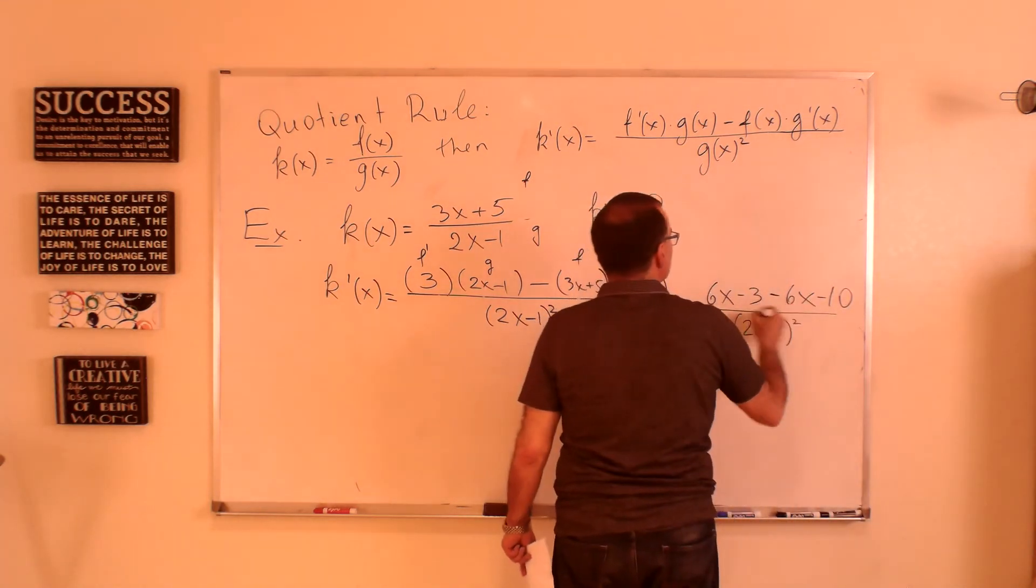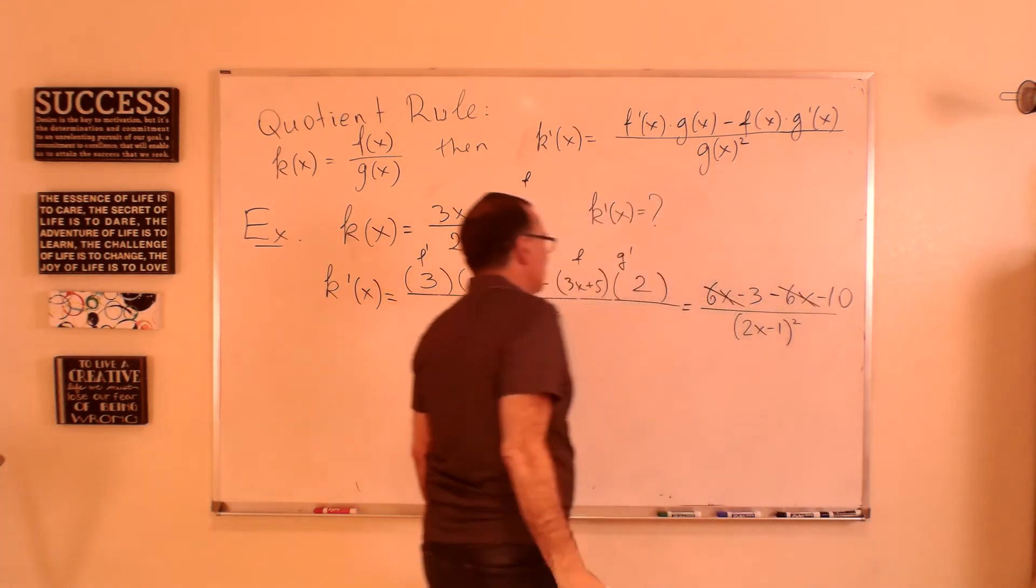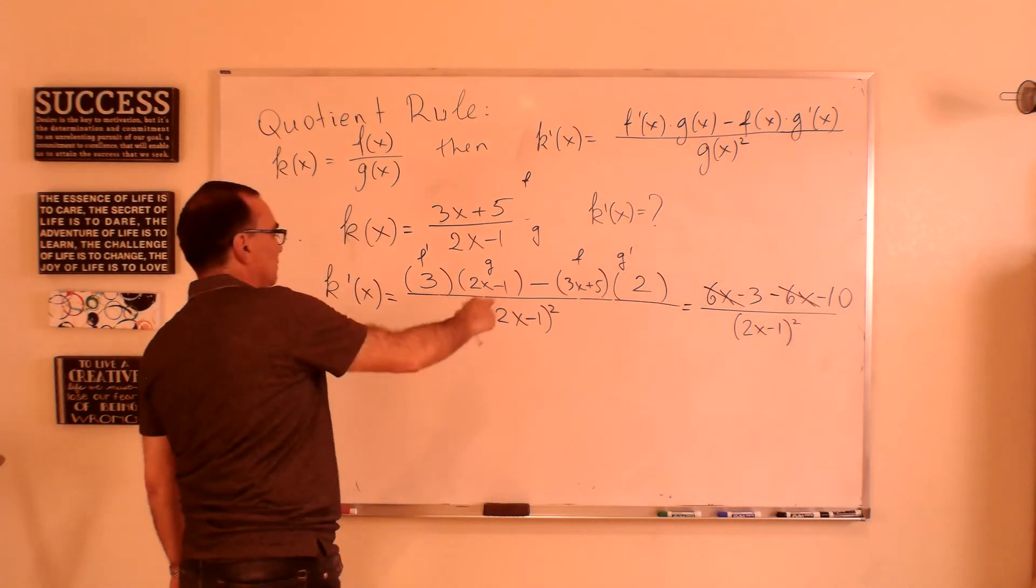Divided by 2x minus 1 squared. And then, of course, 6x and negative 6x will cancel, so you get negative 13 on the numerator.